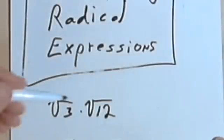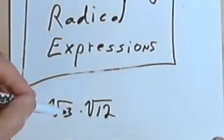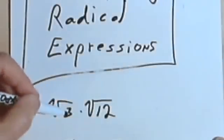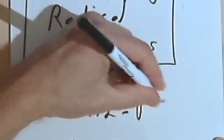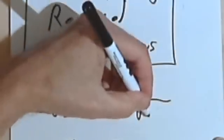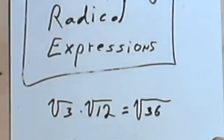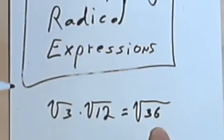Here's the first one. I've got the square root of 3 times the square root of 12. I've got a rule that tells me I can multiply the radicands — the numbers underneath the radical sign — and put everything under one square root. So I'm going to have 3 times 12, and that's 36. Since 36 is a perfect square, I'll just write that as a 6.